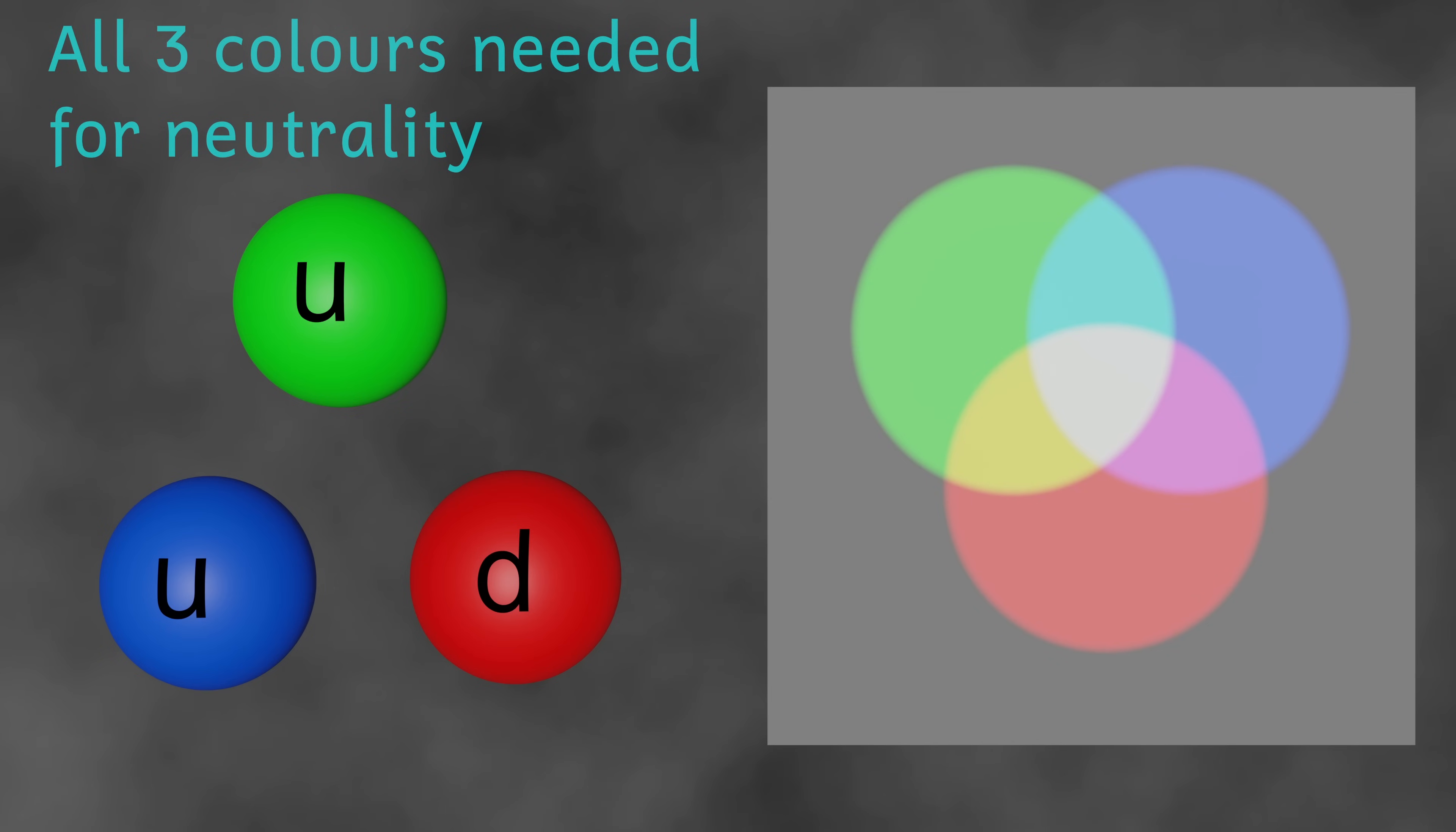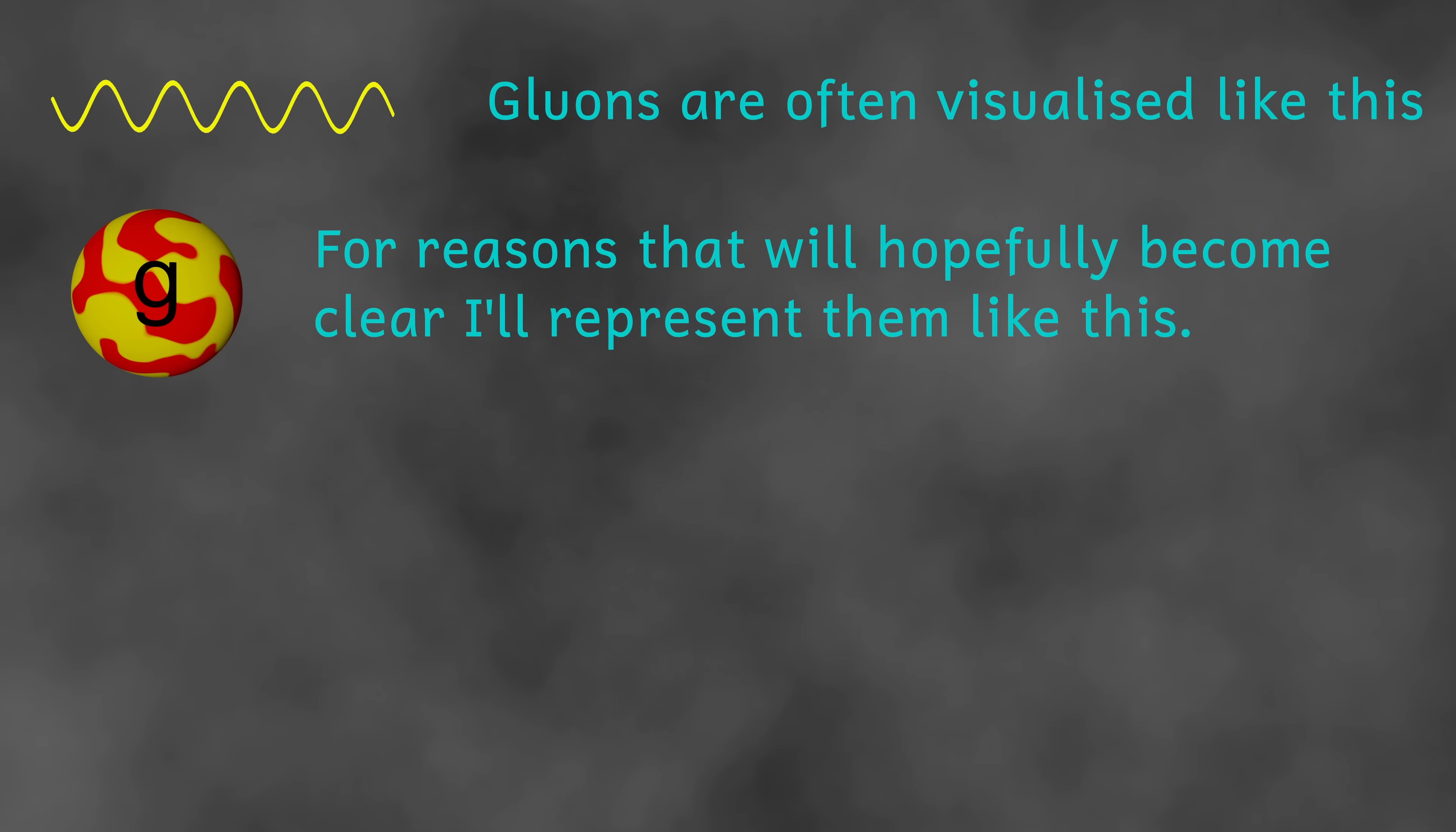To join together and form larger particles, quarks are subject to the strong interaction. The strong interaction is mediated by another particle called the gluon. Again, I talk more about these in my Fundamental Forces video. When quarks combine to form particles, they do so by exchanging gluons. Now, gluons have both a colour and an anti-colour, and so by exchanging gluons, quarks change their colour and maintain colour neutrality.